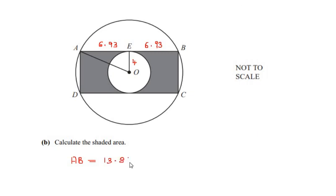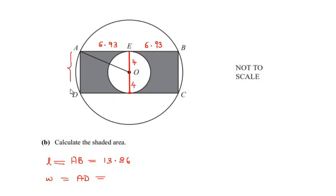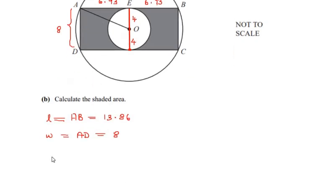To calculate the width of the rectangle, which is AD or BC, we consider the diameter of the inner circle. From O to E is 4, and from O to the opposite side is also 4, so the total width = 4 + 4 = 8 centimeters.